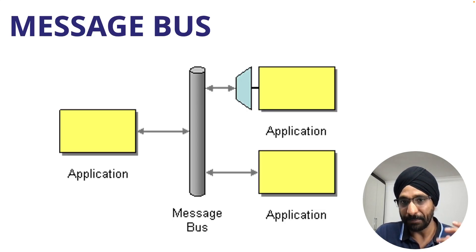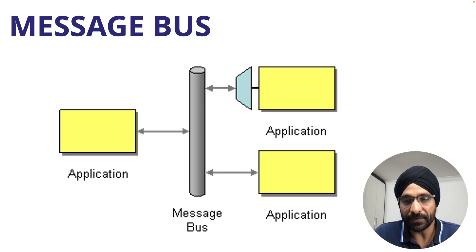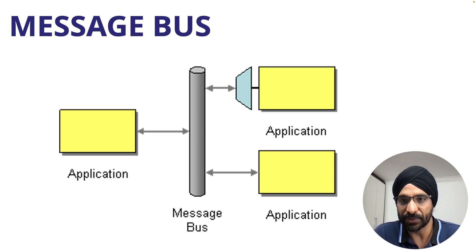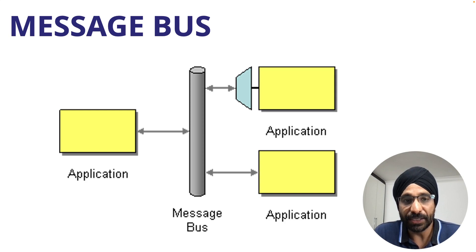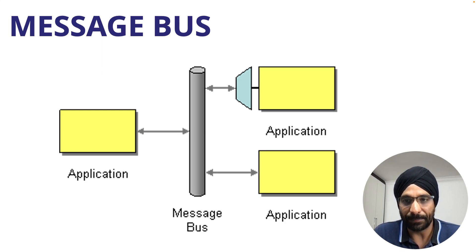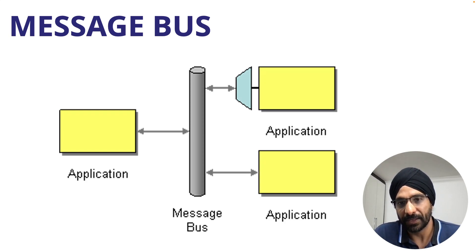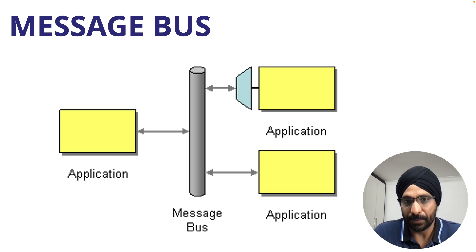A message bus is a communication system that lets software components exchange messages with each other. It's like a central hub for sending and receiving messages between different systems, making integration easier. It allows applications to send messages without knowing the exact destination, which reduces coupling and increases flexibility.